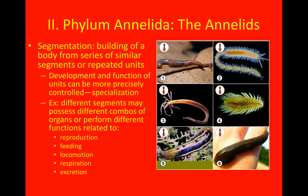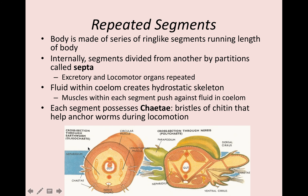Moving on to annelids. The primary characteristic here is segmentation — repeated units found throughout the organism. Different segments may possess a different combination of organs, carrying out reproduction, feeding, locomotion, respiration, or excretion. The segments are ring-like and subdivided by septa, kind of like tiny little walls. The fluid within the coelom of the body cavity creates a hydrostatic skeleton, which they use to move. Each segment contains chaetae, or bristles, that help anchor worms during locomotion.